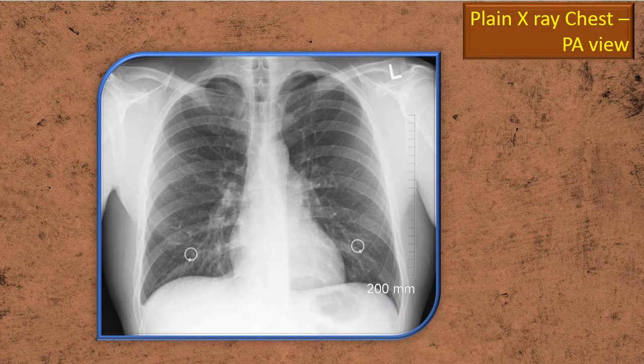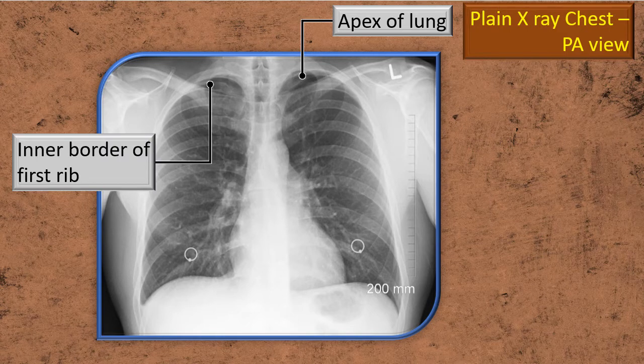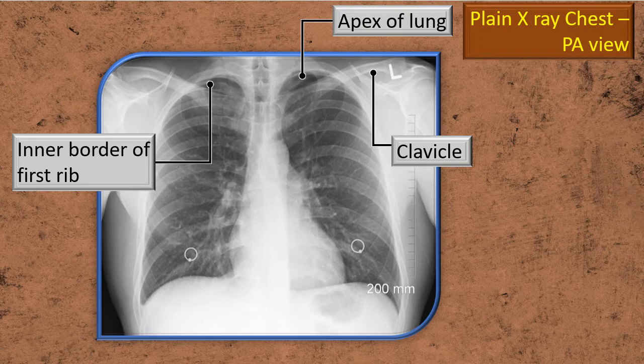Here is a plain X-ray of the chest, PA view. The circled area is the area of current discussion — the apex of the lung. You can see in the upper part the inner border of the rib. Remember the ribs cast a slightly whitish shadow because of the bone material, while the lung is dark or more blackish. A little bit of the clavicle is also seen, which is a good reference bone when you view the X-ray of the chest.